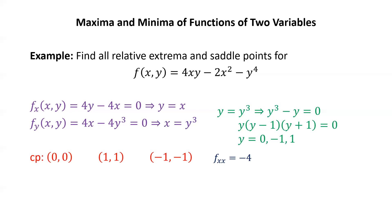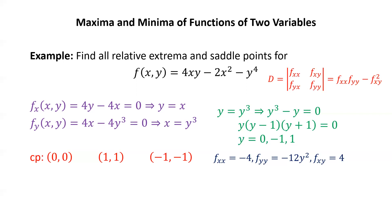We now compute the second partials: fxx is −4, fyy is −12y², and fxy is 4. It follows that D equals fxx·fyy minus fxy², which gives (−4)(−12y²) minus 16, or 48y² minus 16. Plugging in y = 0, we get D equals −16. So for the critical point (0,0), D is negative 16.